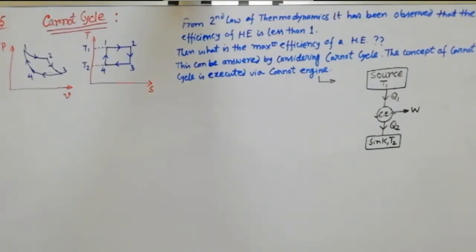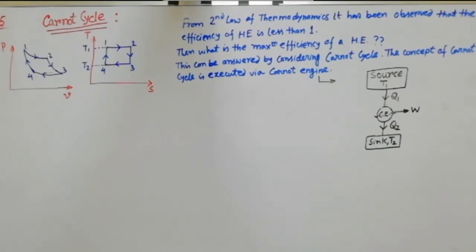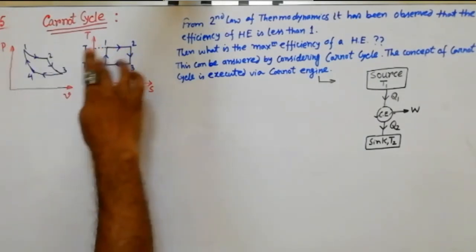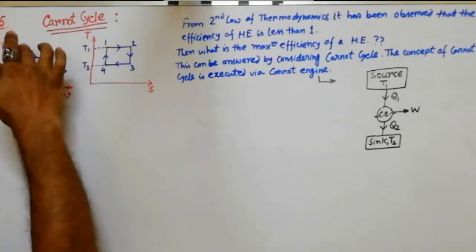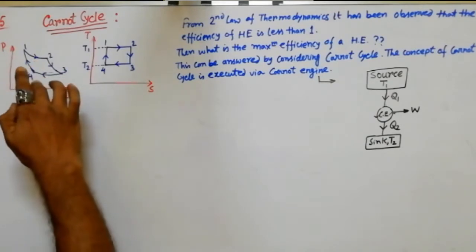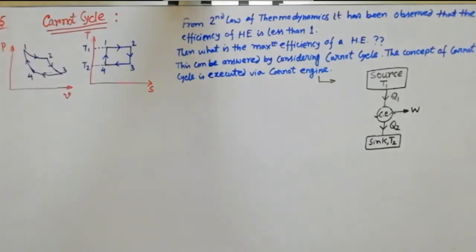We should see what the different processes are in a Carnot cycle. If we plot the Carnot cycle on a PV plane and a TS plane, it will look like this. This is the PV plane and this is the TS plane. The processes 1→2, 2→3, 3→4, and 4→1 are all reversible processes.